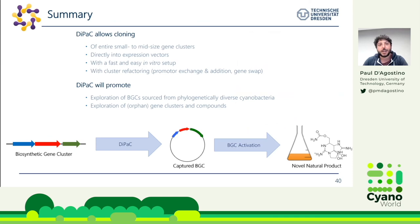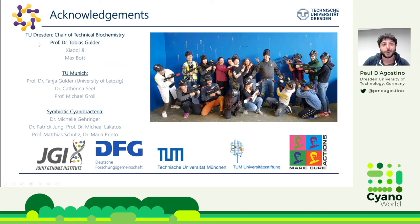In summary, DiPaC is very good for cloning small to mid-sized clusters, with a very easy in vitro setup and cluster refactoring capability. It is my hope that DiPaC will enable further exploration of cryptic biosynthetic gene clusters, especially from cyanobacteria. If anyone is interested in using this method or thinks it might be useful for them, please contact me — I'm happy to help. I would like to thank Professor Golda, who has been an absolutely amazing supervisor; everyone from TU Munich, who have now moved to the University of Leipzig; and all the people I work with in my symbiotic cyanobacteria group. Thank you.